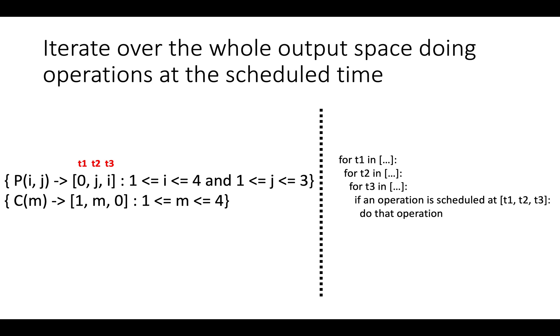So the first step is to think of a very simple template for the code generation. Let's imagine that all of our code generation for these loop nests is going to just iterate over every single time in the output space, doing operations for their schedule. So the output space for each of these statements is three dimensions, which means we're going to have three loop nests with loop index variables. Let's call them t1, t2, and t3.